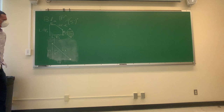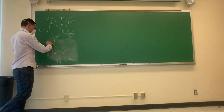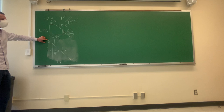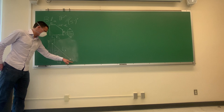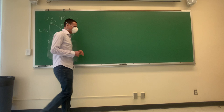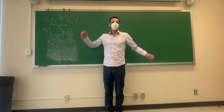L minus E1 minus E2 is the strict transform of the unique line in P2 that connects the two points we chose. Two points in the plane that aren't the same determine a unique line — it's the same in projective space.